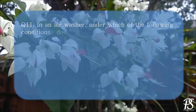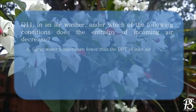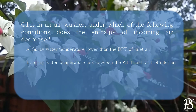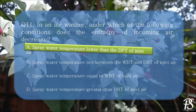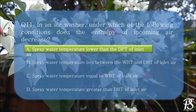In an air washer, under which of the following conditions does the enthalpy of incoming air decrease? A. Spray water temperature lower than the dew point temperature of inlet air. B. Spray water temperature lies between wet bulb temperature and dry bulb temperature of inlet air. C. Spray water temperature equal to wet bulb temperature of inlet air. D. Spray water temperature greater than dry bulb temperature of inlet air. The correct option is A — spray water temperature should be lower than the dew point temperature of inlet air.